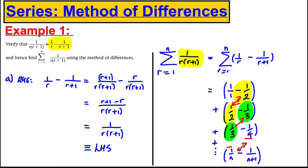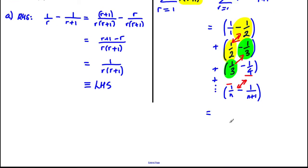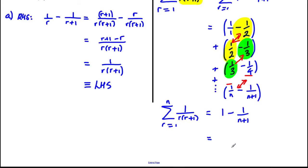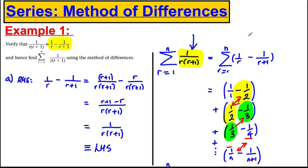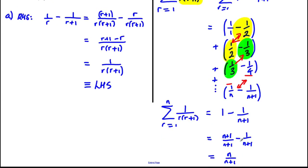The 1/n will be cancelled by a negative 1/n. So all you're left with are the first term, which is 1/1 = 1, and the last term, which is −1/(n+1). Therefore the sum from r = 1 to n of 1/(r(r+1)) equals 1 − 1/(n+1). Writing over a common denominator: (n+1)/(n+1) − 1/(n+1) = n/(n+1), and we're done.